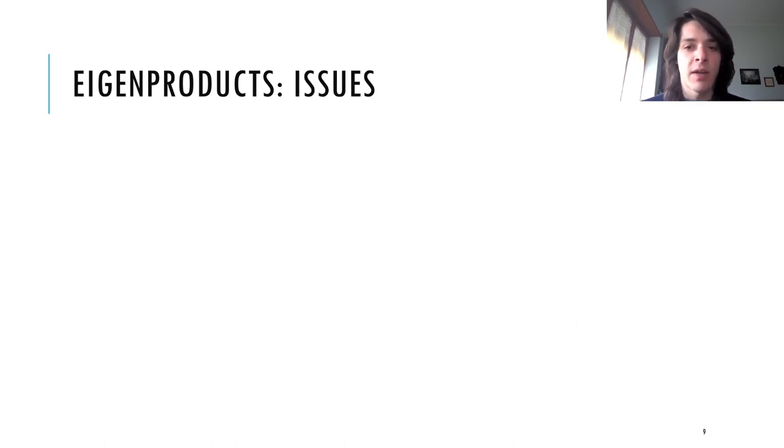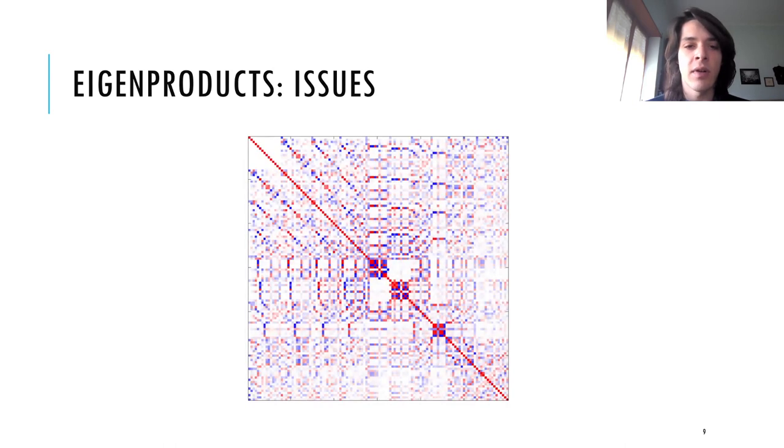Despite working very well, unfortunately the eigenproducts come also with many issues. The main one is that they are not orthogonal, as we show here by presenting the matrix of inner products.